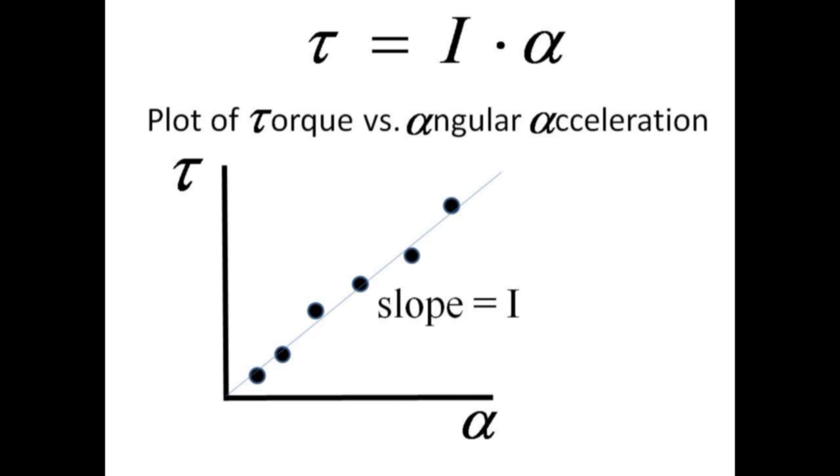Since angular acceleration is proportional to the torque, a graph of torque tau versus angular acceleration alpha should be a straight line with a slope given by the moment of inertia of the rotating object. In this lab, the rotating object is just a wheelbarrow wheel.